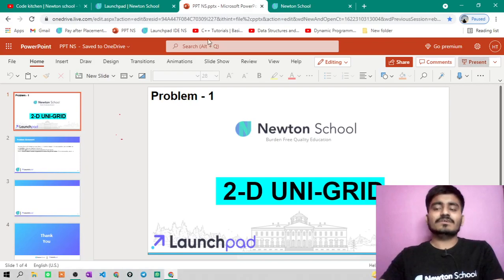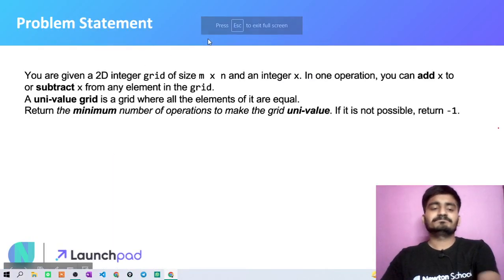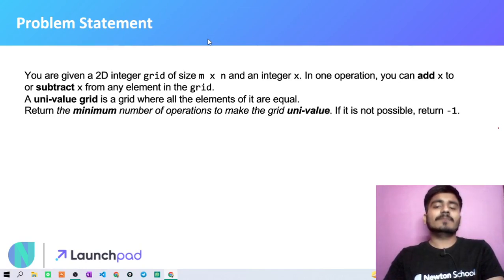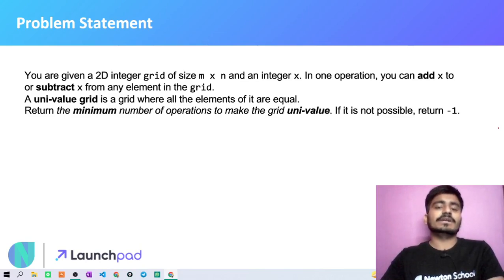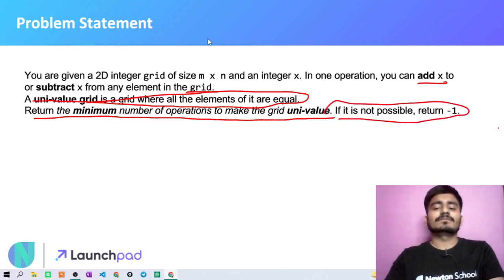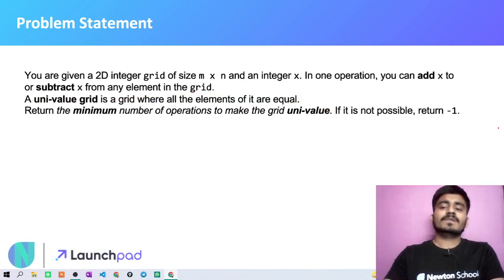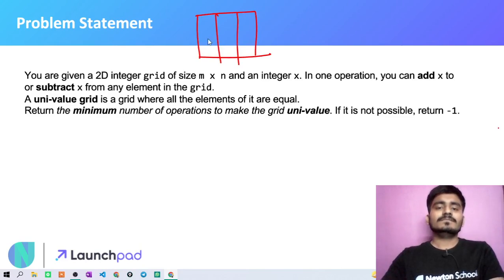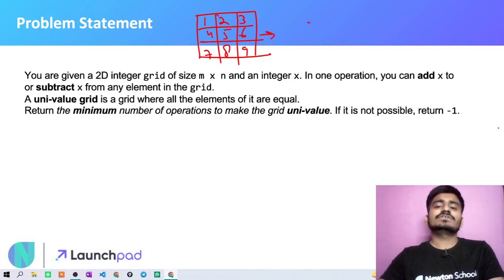Now let's see the problem statement. You are given a 2D integer grid of size m cross n and an integer x. In one operation, you can add x or subtract x from any element in the grid. A univalue grid is a grid where all the elements are equal. Return the minimum number of operations to make the grid univalue; if it is not possible, return minus one. So simply, you are given a 2D array with some elements, and one more integer x — suppose x equals five.